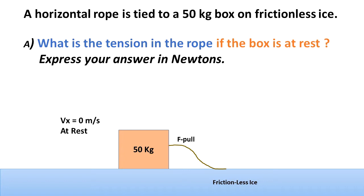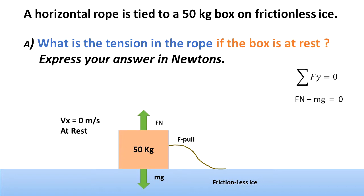Let's see what are the forces in the y direction. We know that the box is at rest, hence there is no acceleration in the y direction. So the summation of the forces in the y direction has to be zero. The only forces we have are mg going downwards and fn going upwards — they both add to zero. For this special case on a flat surface, fn is equal to mg.